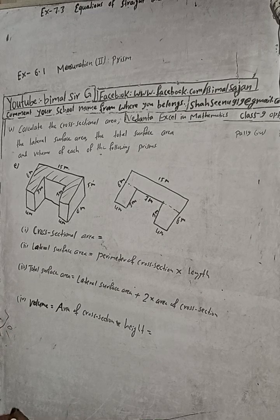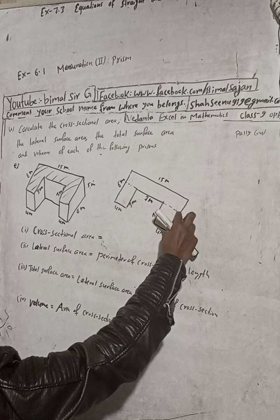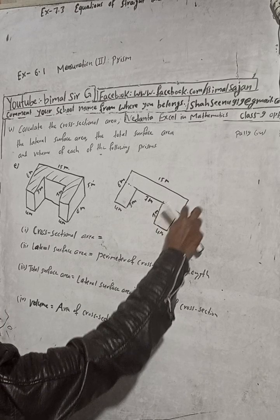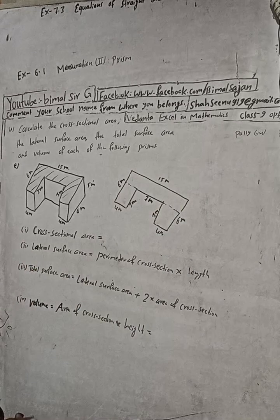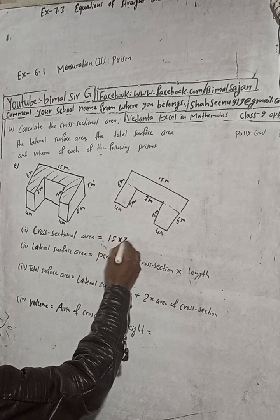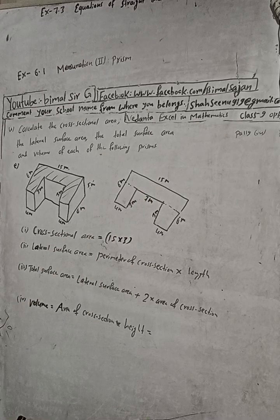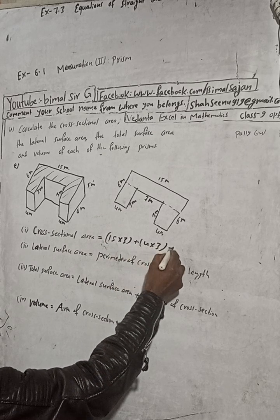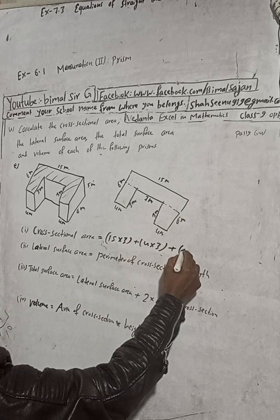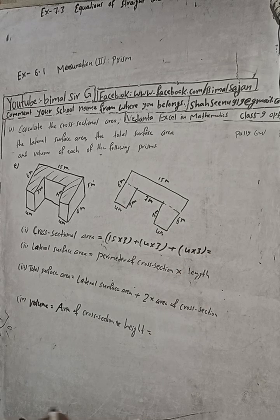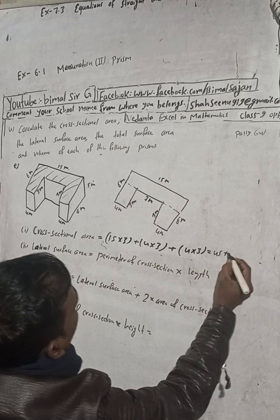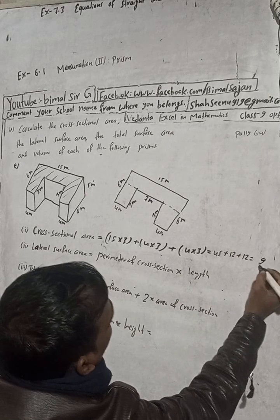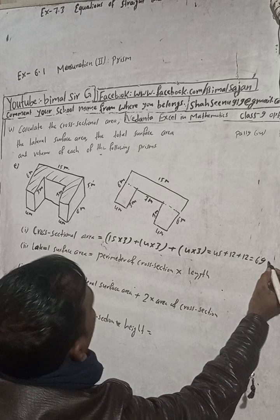The width values are 3, 3, 3, and 3. The big rectangle is length 15 into breadth 3. Then the smaller rectangular parts are each 4 into 3, and we have two of them: 4 into 3 plus 4 into 3. Total: 15 threes are 45, plus 4 threes are 12, plus 4 threes are 12 — total is 69.